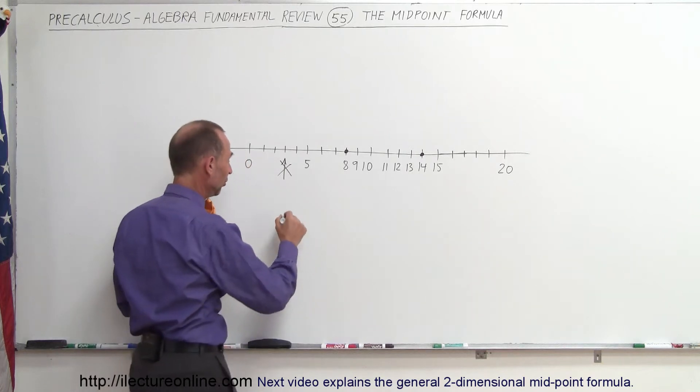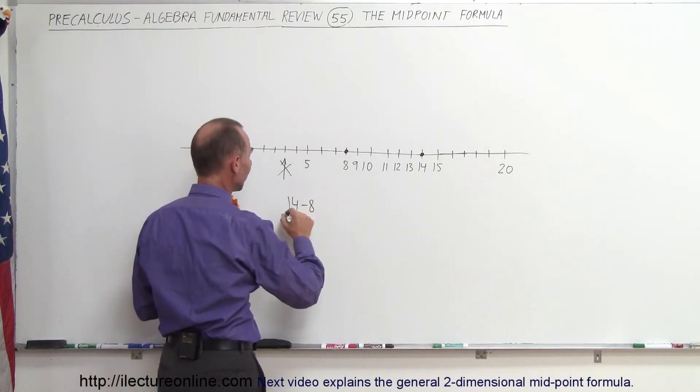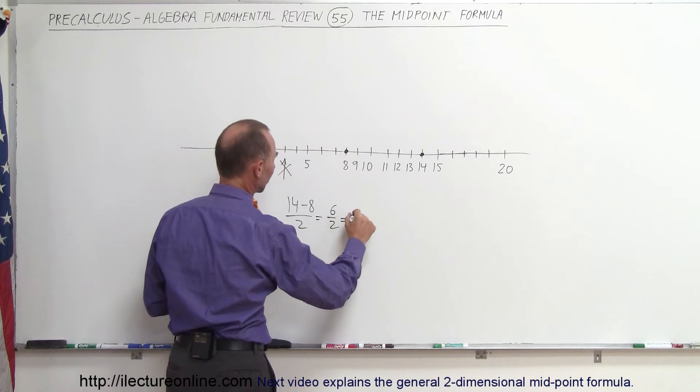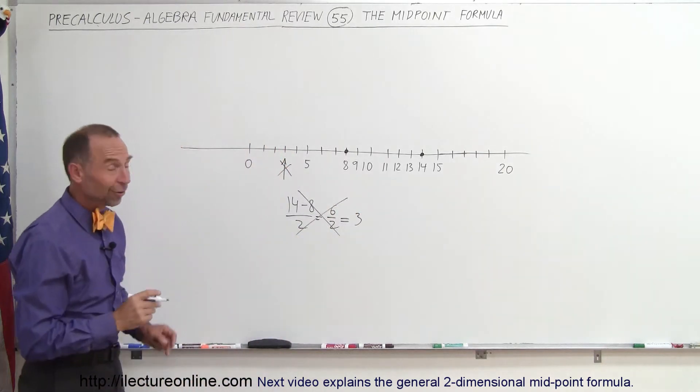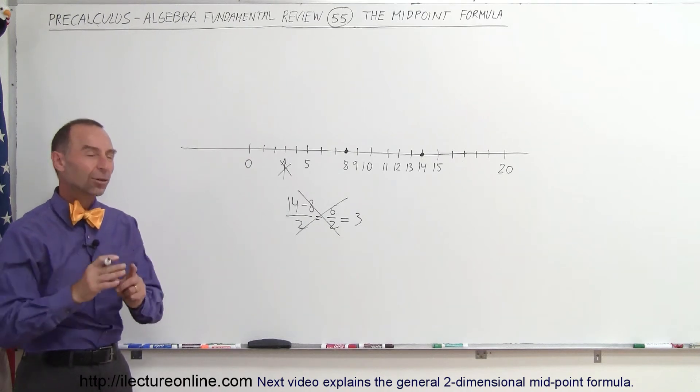So when you subtract the 2, 14 minus 8 divided by 2, we get 6 divided by 2, which is 3, which is not the right way to do that. To our surprise, to find the middle point, we're actually supposed to add those two points.